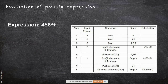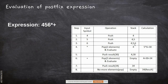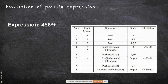The next character is 6, also an operand, so push it onto the stack. The next character is *, which is an operator. So we pop the top two elements — 5 and 6 — and perform multiplication: 5 × 6 = 30.